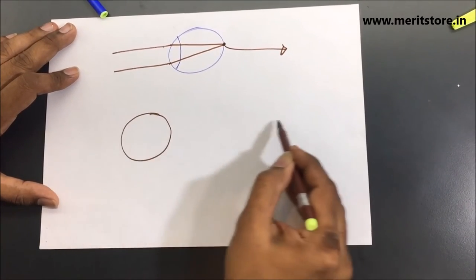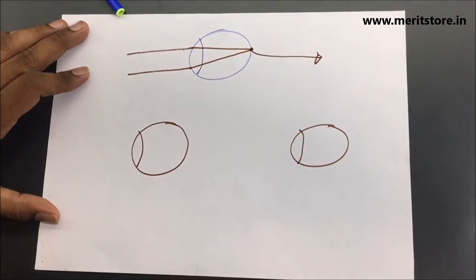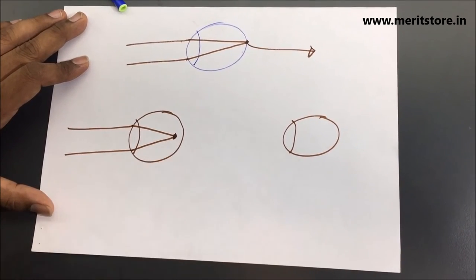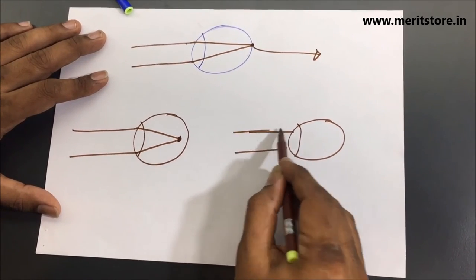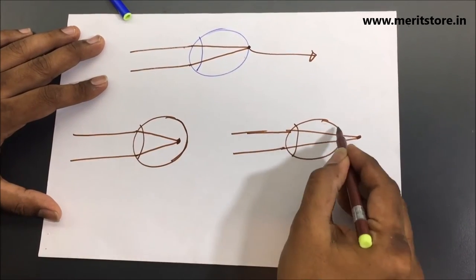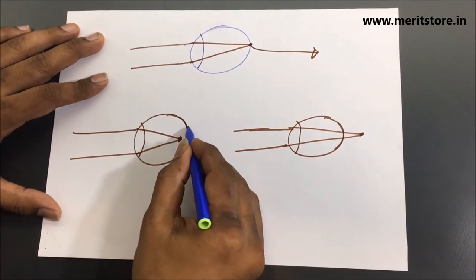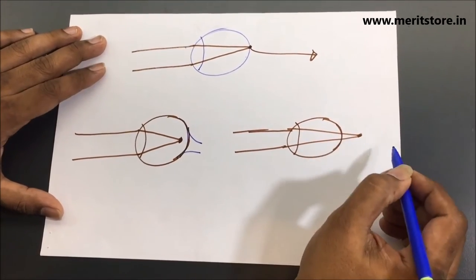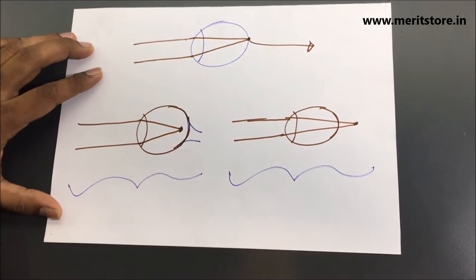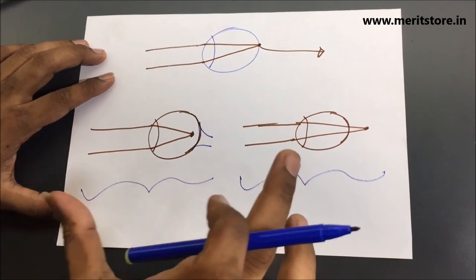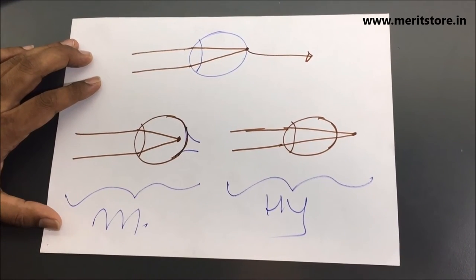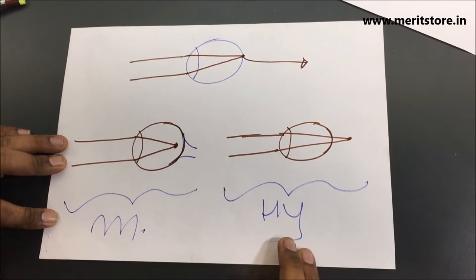In some cases, the eyeball bulges or elongates, causing the image to converge in front of the retina. In other cases, the image converges behind the retina. In both cases, the image is not formed on the retina, and the optic nerve does not carry it effectively — a blurred image results. These are defects of the human eye: when the image falls in front, it is myopia; when it falls behind, it is hypermetropia.